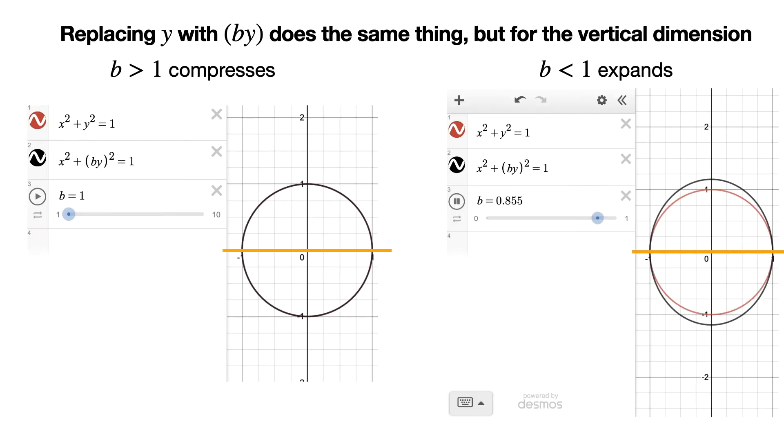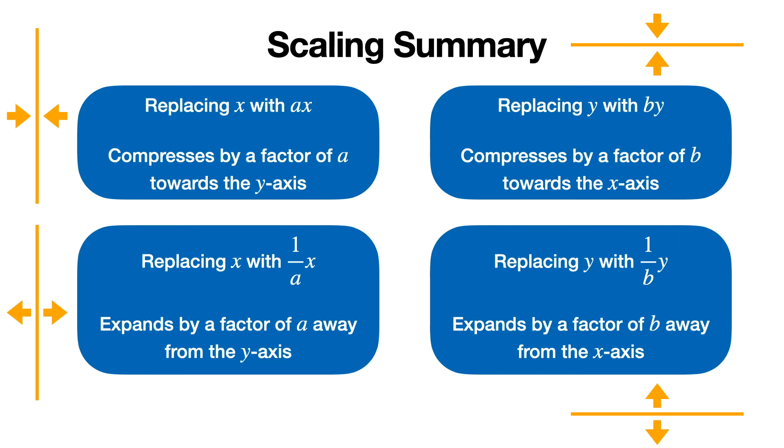Replacing y with by does the exact same things, just in the vertical dimension instead of the horizontal dimension. The summary of all these scalings is on the screen right now, and I tried to include these axes plus arrows to show what each of them does.